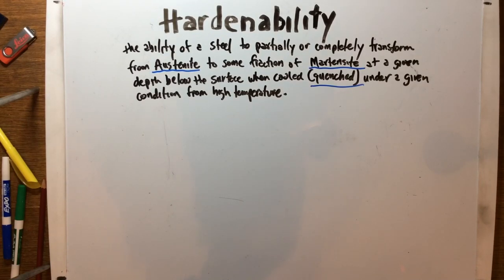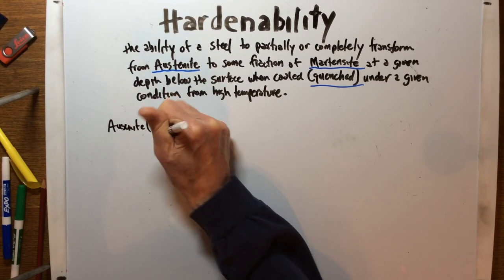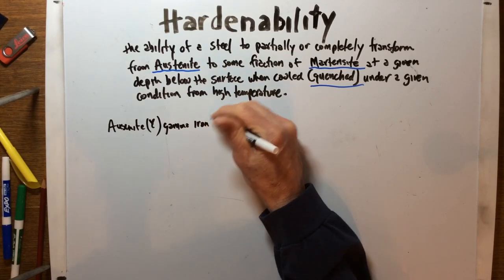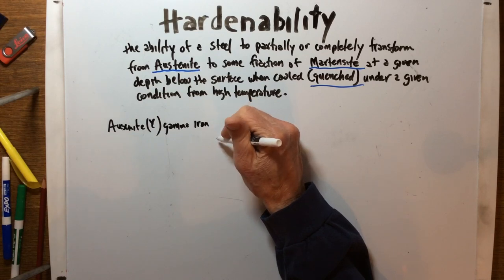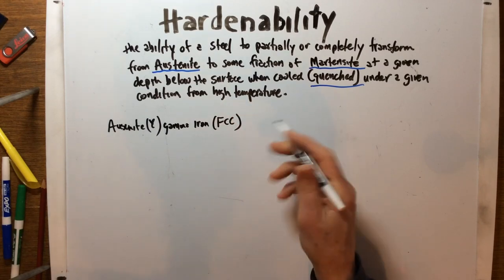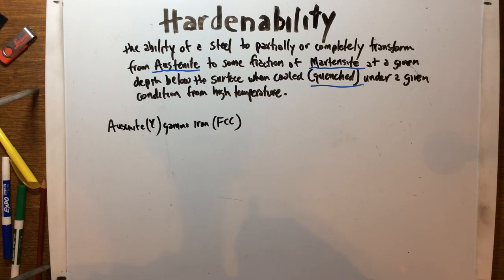Austenite is simply the gamma phase of steel at elevated temperatures — it's the gamma iron. It will always be above 1333°F. Most importantly, it is an FCC structure where we have the maximum amount of carbon absorption in that phase.